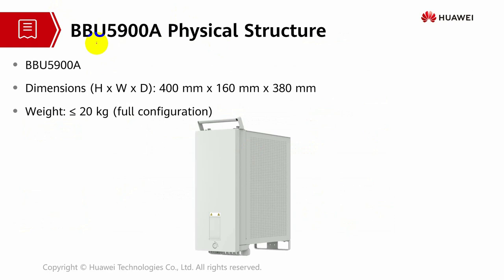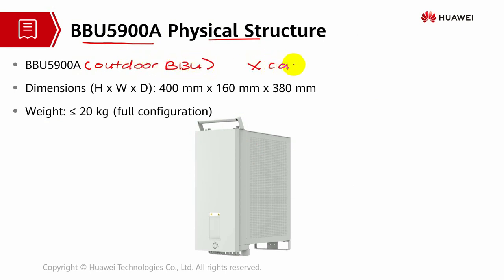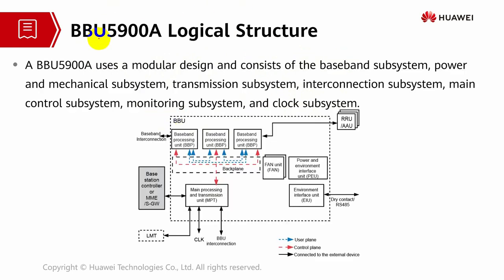Next, we're going to discuss BBU 5900 series A. What is the difference compared with the previous one? BBU 5900 series A is known as an outdoor BBU — it doesn't need any cabinet and will be installed outdoors. It has its own dimension and its own configuration. Looking at the logical structure of the outdoor BBU, it uses a modular design consisting of the baseband subsystem, power and mechanical subsystem, transmission subsystem, and interconnection subsystem.